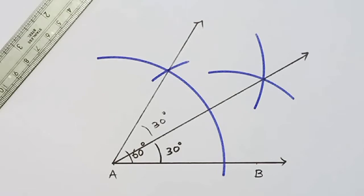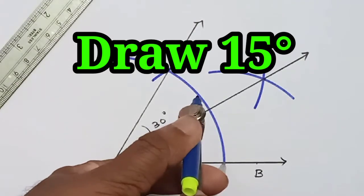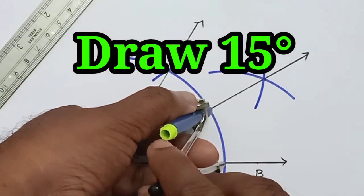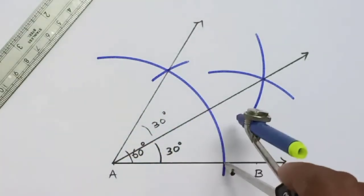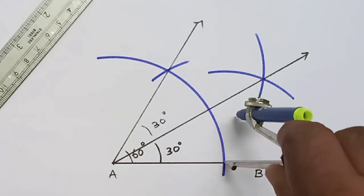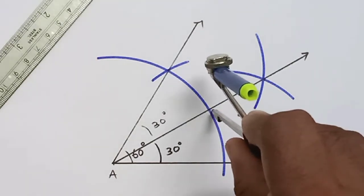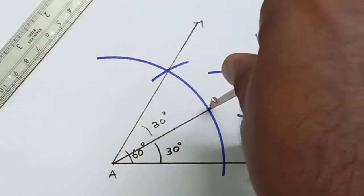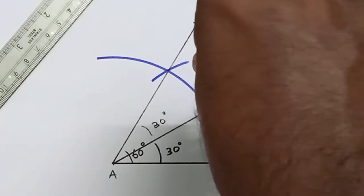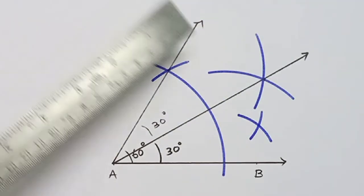Again to draw 15 degree angle, take more than half of this length as radius and draw arcs. From here, here also draw arcs. Join these intersecting points.